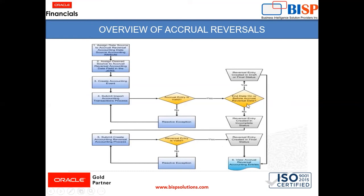If the end date on or before accrual reversal date is no, then go to the reversal entry created in incomplete state. Then submit the create accounting reversal accounting process to complete. The next question is whether the reversal entry is valid. If yes, the reversal entry is created in final status and you can view that accrual reversal entry. If no, then resolve the exception and move back to the fifth step. This is the process flow of the accrual reversal.